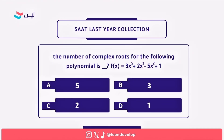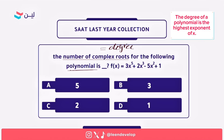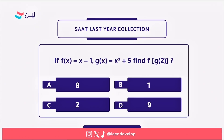The next question asks for the number of complex roots of the given polynomial. For a polynomial, the number of complex roots equals its degree, and the degree is always the highest exponent of x. Here we have exponents 5, 3, and 2 — the highest is 5, so the correct answer is 5.